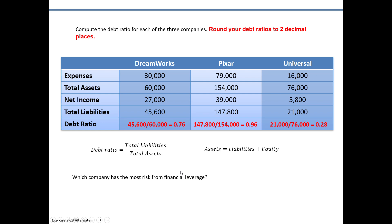So if I'm looking for the company with the most risk for financial leverage, I'm looking for the biggest composition of assets financed by debt or liabilities — meaning the highest debt ratio — which in this example would be Pixar. It doesn't mean they're absolutely going to go out of business, but they're financing almost all of their assets by debt, which is a very risky situation if they don't have the available cash flow to pay back that principal and/or interest.